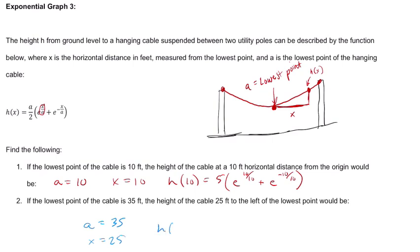So we're looking for h of x and x is 25. So that's 35 divided by 2, 17.5 times e to the power of 25 over 35 plus e to the negative 25 over 35.